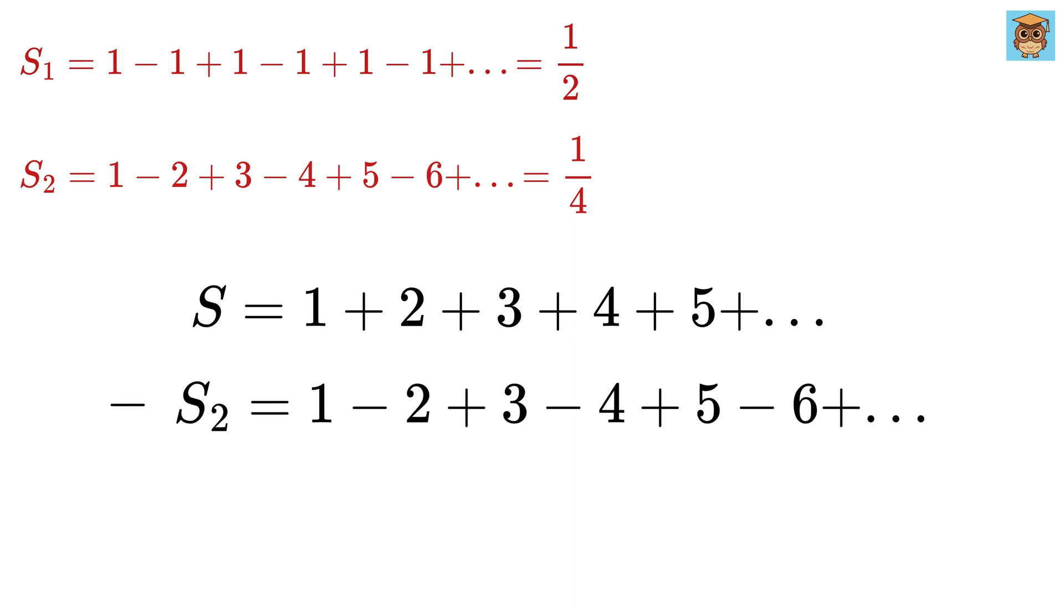Now, simply subtract both these series to get S minus S2 equals 1 minus 1 is 0, then 2 minus minus 2 is 4, then 3 minus 3 is 0, and 4 minus minus 4 is 8, then 5 minus 5 is 0, then 6 minus minus 6 is 12, and so on.